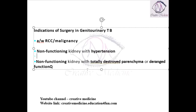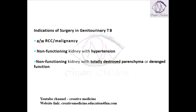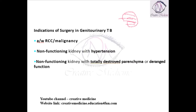Second, if there is a non-functioning kidney with totally destroyed parenchyma and deranged function — if the whole parenchyma of the kidney is destroyed and there is deranged function — then definitely we should do surgery. So these are the indications of surgery for genitourinary tuberculosis.